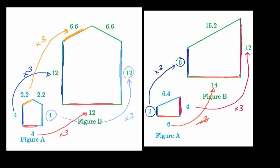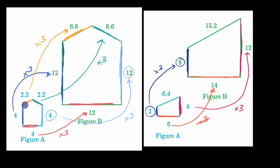Looking really good. We have one last pair to check — 2.2 to 6.6, multiplying by three once again. All of the side lengths have been scaled up by three. So we can feel pretty confident that figure B is indeed a scaled up representation of figure A.